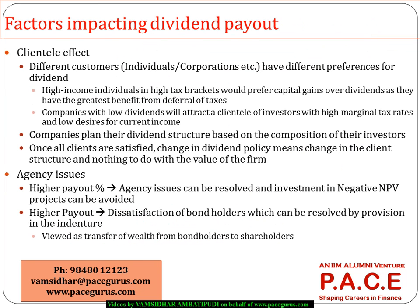There are two major dimensions impacting dividend payout. From the client's perspective, different clients have different preferences for dividends. For example, a very high-income individual who is already in a high tax bracket — if large dividends come to him every year, those dividends are also taxed at a very high tax rate, meaning he ends up losing more. So he prefers not to receive dividends this year, opting for capital gains instead.